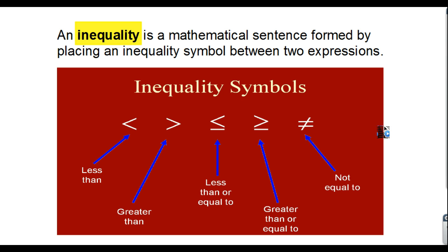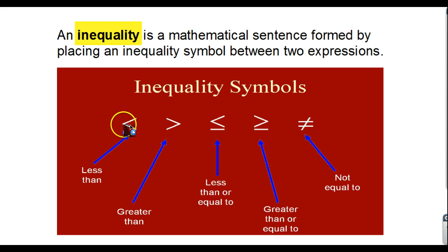Let's go ahead and look at some of these symbols. The first one is the less than symbol, and then we have the greater than symbol. And then as we put a line underneath, it becomes less than or equal to, and then greater than or equal to. And then we have an equal sign with a line through it, which means not equal to. The way we always read these is from left to right — something on the left side will be less than whatever is on the right side.